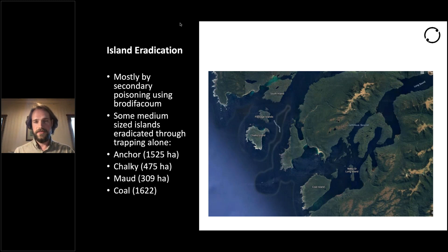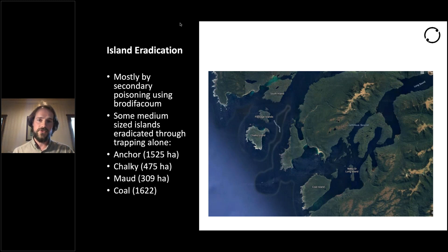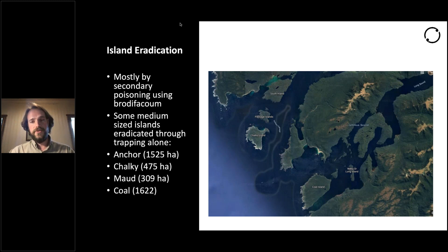The rodents eat the brodifacoum — it's a slow-acting poison so that over time it builds up inside them. They eat a little bit, don't feel sick, eat more, and then they die. They are toxic throughout this time, so when stoats, cats, or ferrets eat them, they then get poisoned — it goes up the food chain. We have actually trapped some islands to extinction, including moderate-sized ones.